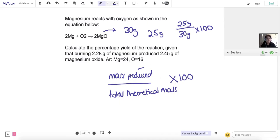We have the mass produced, and that is 2.45. So to calculate that total theoretical mass, it's just your typical masses from equation question, where we've got 2.28 grams of magnesium are reacted. So we can calculate the number of moles of magnesium, which we can then use to calculate the number of moles of magnesium oxide, to then calculate the mass of magnesium oxide that could theoretically be produced.